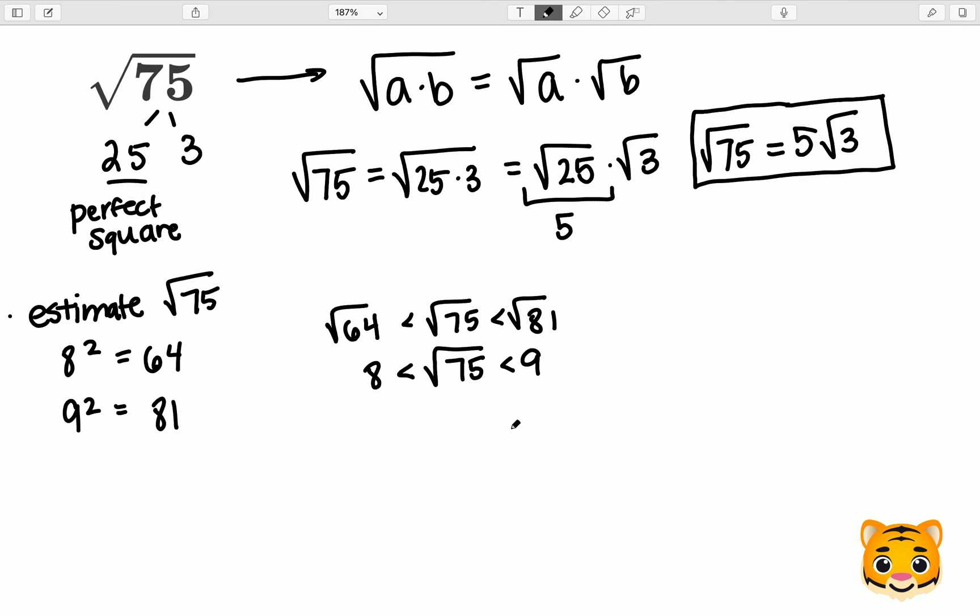To find the value that the square root of 75 is closest to, we can look at the difference between 75 and the perfect squares that it lies between.